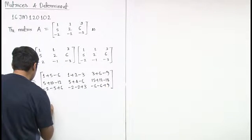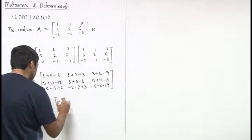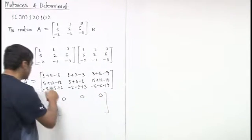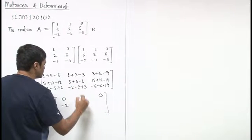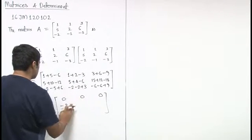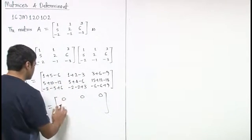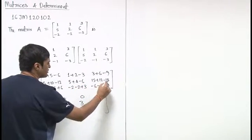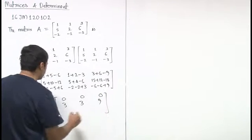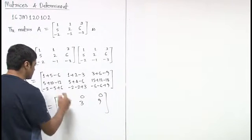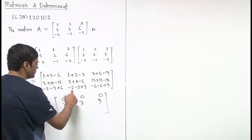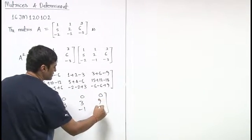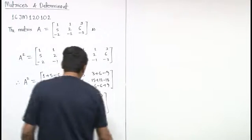So A squared comes out to be: [0, 0, 0; 3, 3, 9; -1, -1, -3]. Since A squared is not zero, A is not nilpotent of order 2. We will need to check order 3, so we will find A cubed.